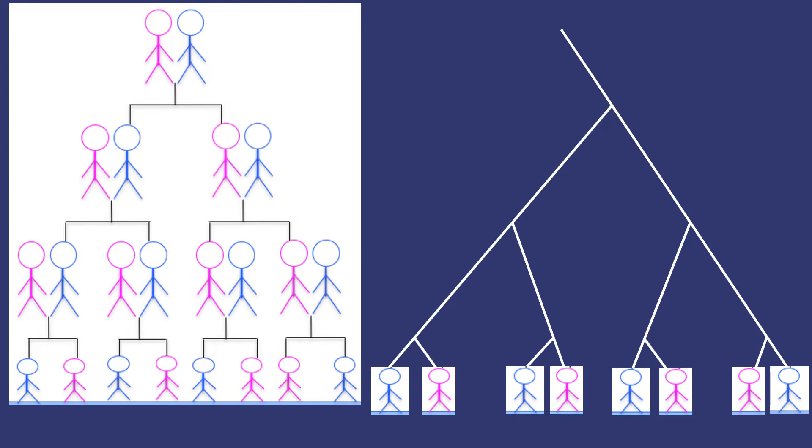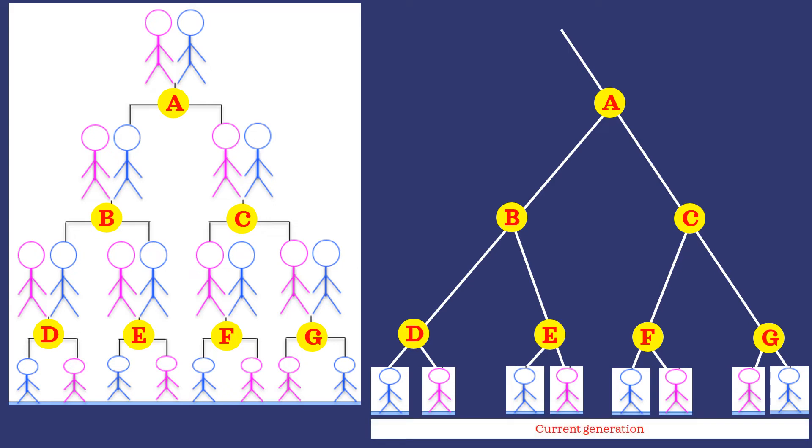Each node on this tree reflects a set of ancestors. Node A reflects the point when the original great grandparents had children. Node B represents when their son had his own family. Node C represents when their daughter had her own family. Then those kids grew up, and nodes D, E, F, and G represent each of those families, all the way down to the current generation, meaning the children who are alive today.